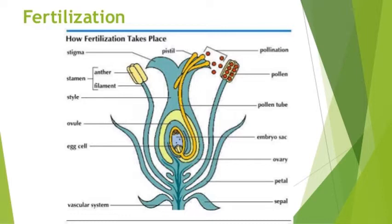The carpel or pistil is divided into three parts: stigma, style, and ovary. The pollen tube runs through the style and reaches the ovary. This pollen tube carries the male cells — the male reproductive cells or male gametes — inside it. Inside the ovary, the female gametes or female reproductive cells are present.